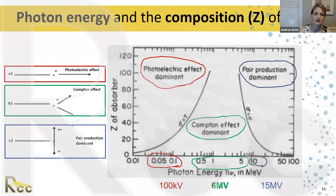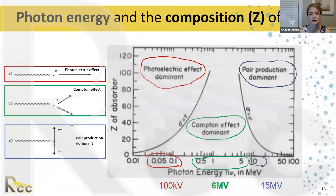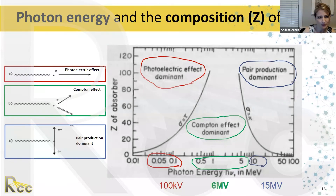Conceptually, the photoelectric effect dominates around 100 kV energy, the Compton effect dominates at 6 MV, and pair production becomes dominant at higher energies such as 15 MV.